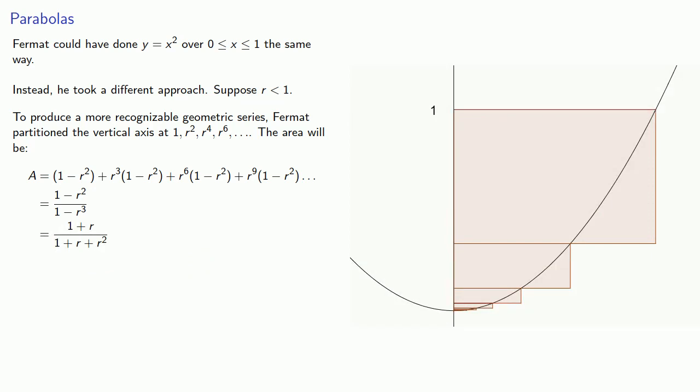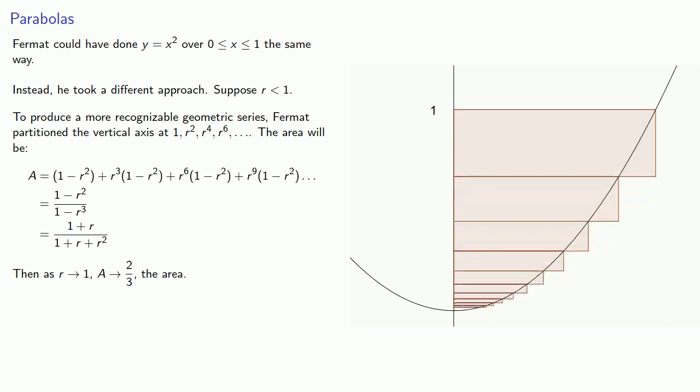And as r gets close to 1, our area gets close to 2 thirds the area. And since this entire region fits in a rectangle that's 1 wide by 1 high, we can find the area under the curve, 1 minus 2 thirds, or 1 third.